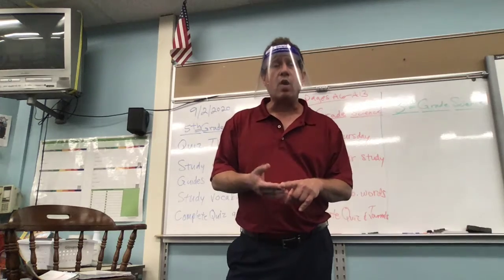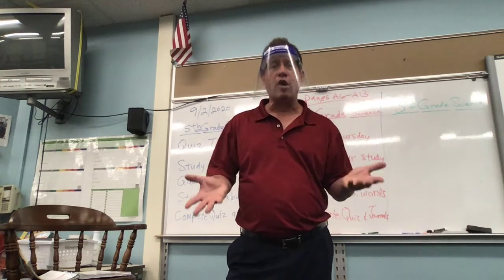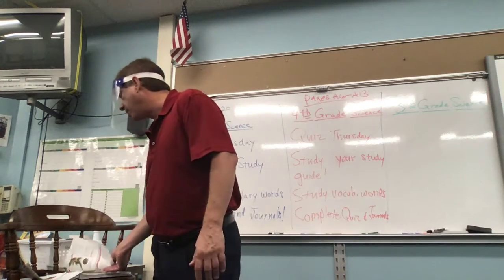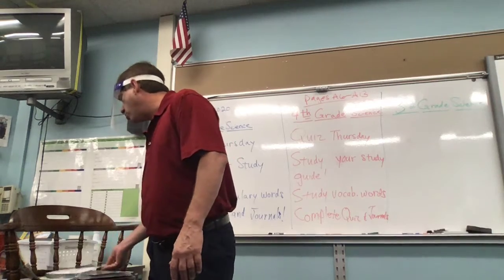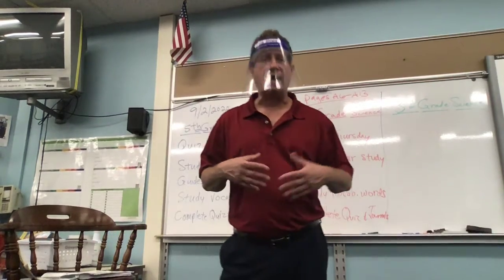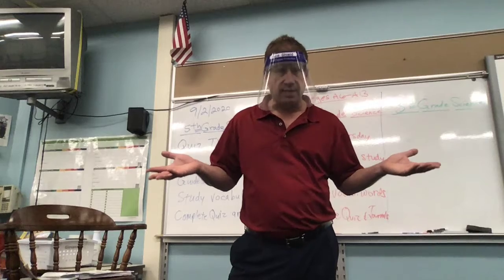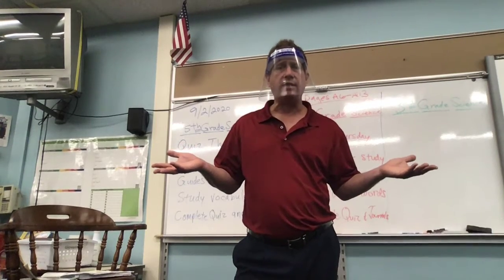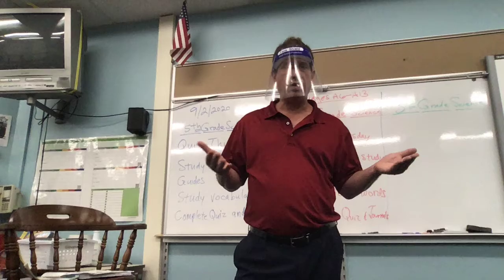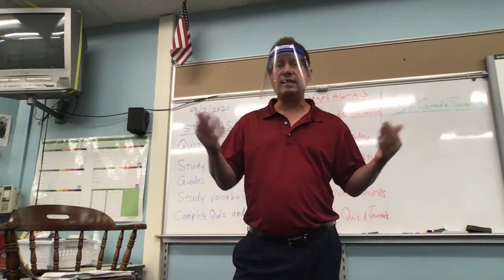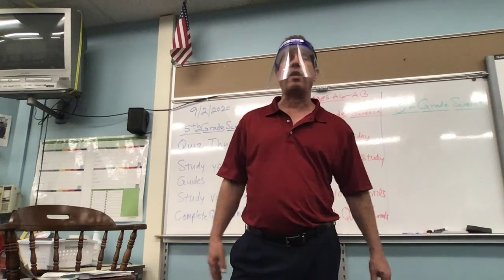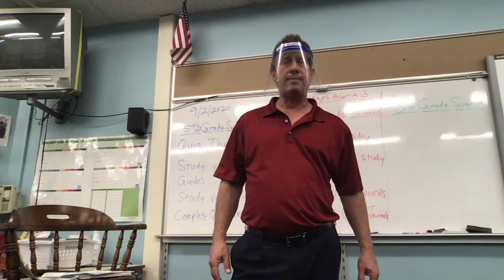Just type into Google 'characteristics of living things' — other websites come up. Give me a summary of that website. Or pick a page in your book. Say, 'I summarize page A7, here are three sentences of what I wrote.' Okay?